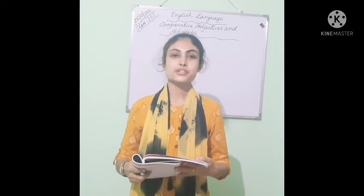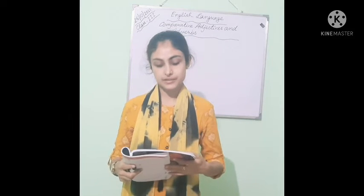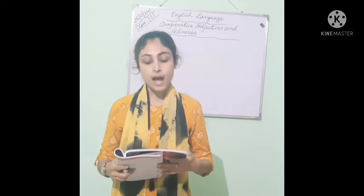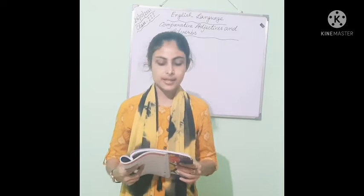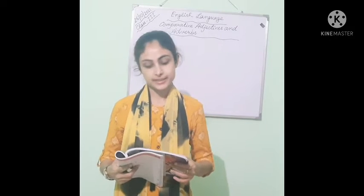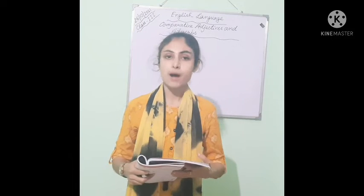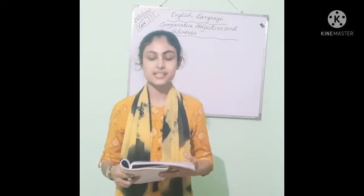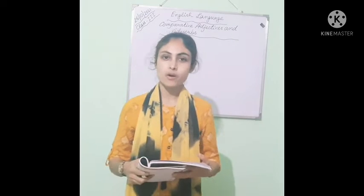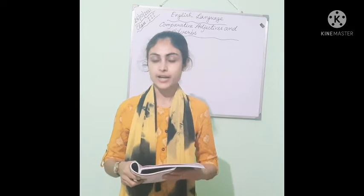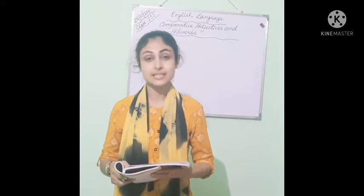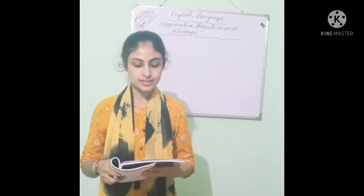Page number 84. We use comparatives to say how things are different. For most short words, add -er and than. Such as: the mouse is smaller than the horse. Here, 'small' is the word and I have made it comparative — smaller. I have added -er. This is the rule. So, the mouse is smaller than the horse. This is comparative.